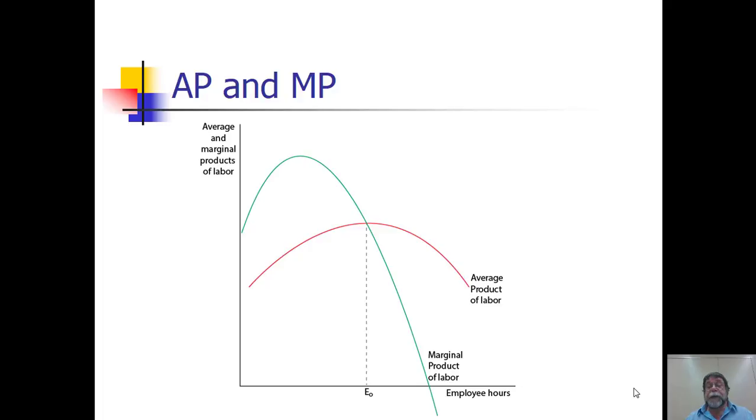Now, notice an interesting phenomena here. And this is an important one that we'll be coming back to several times. If we look at the point where the marginal and average product curves intersect, we observe that that appears to be the maximum level of average product. In this case, it occurs when E0 hours of labor are used. And that in fact is correct.